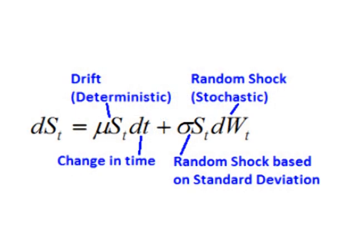Brownian motion states that there are two parts to random movement: a deterministic component and a random stochastic component. These two combine to create the observed movement.